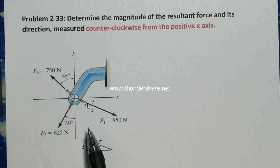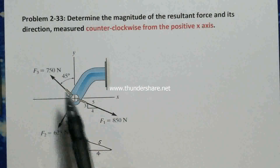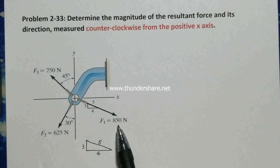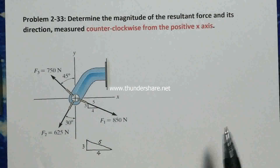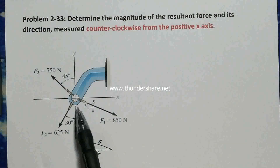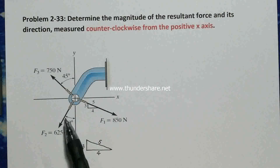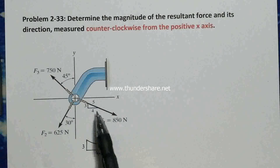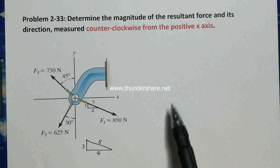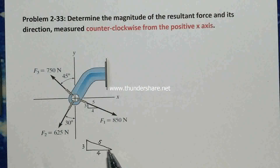In this picture you have three forces F1, F2, and F3. The magnitude of each force is given here. The directions of these forces are represented by angles: 30 degrees, 45 degrees, and also by a small slope triangle. I've put a larger triangle for this.